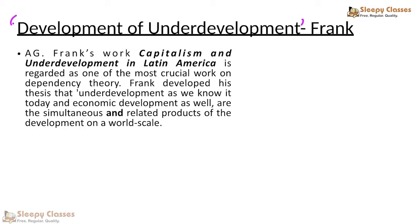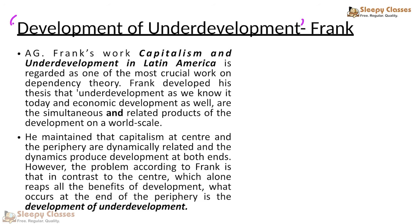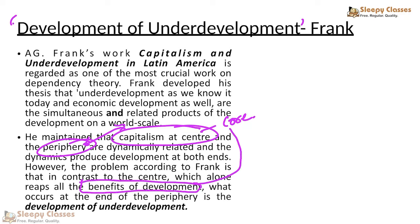Because core countries will increase their profits as long as periphery countries remain unindustrialized. They will buy primary goods from the periphery and sell manufactured goods back to them. This is the idea of capitalism at the center — your core countries — and the periphery, these two are dynamically related. This dynamic relationship leads to the benefits of development going to the core countries, while in the periphery there is no development. In fact, the only thing developing is underdevelopment.